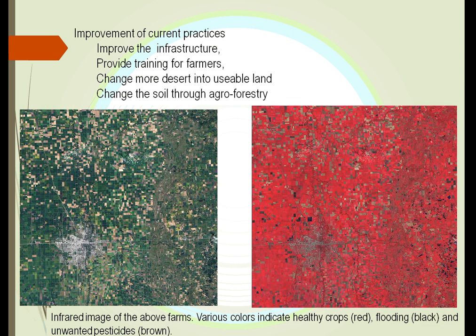We can improve current practices using GPS, satellites, and better techniques for analyzing the soil. We can identify where pesticides should be used and where better fertilizers are needed by comparing satellite images of the same farm — seeing where crops are healthy, where there is flooding, and where there are unwanted pesticides — and change this with modern techniques.